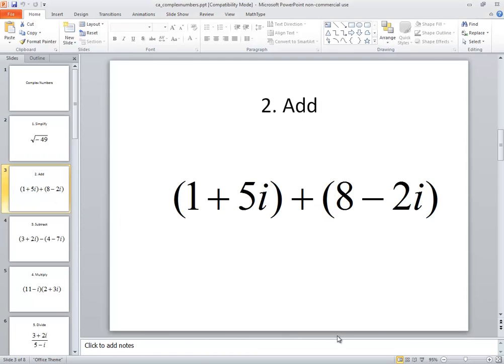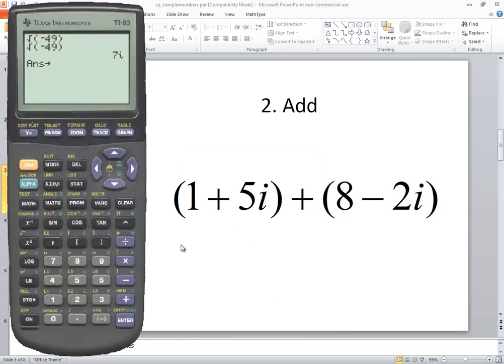Now adding two complex numbers, you pretty well type it in as you see it. So I'll do beginning parentheses one plus five. Now the i is above your decimal, so you do second decimal to get the i. Closing parentheses plus beginning parentheses, eight minus two, second decimal for the i and then closing parentheses and press enter. And our answer would be nine plus three i.